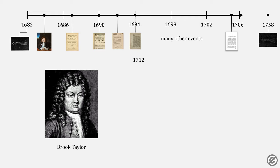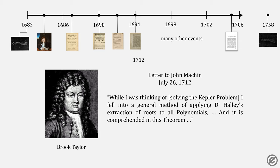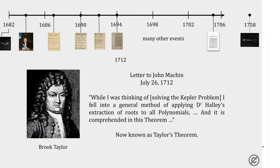Let's jump back in time now to 1712, to one Brooke Taylor and a letter to John Maschin. He writes: while I was thinking of solving the Kepler problem, I fell into a general method of applying Dr. Halley's extraction of roots to all polynomials, and it is comprehended in this theorem. We now refer to that as Taylor's theorem.